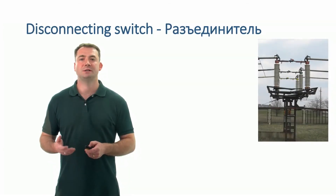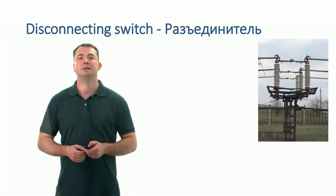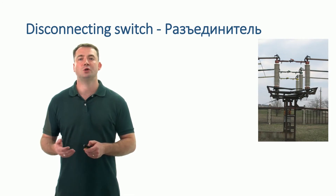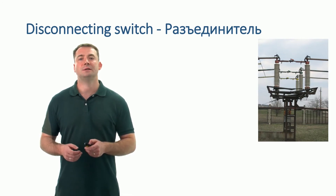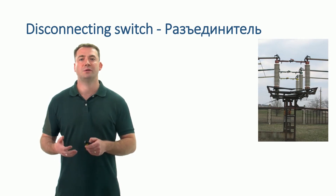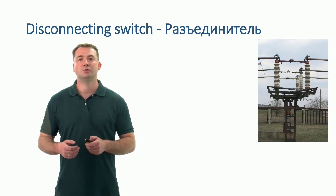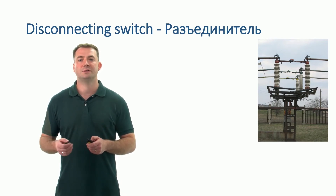Disconnecting Switch. A disconnecting switch, or disconnector, is an electrical switch used in high-voltage circuits to isolate a section with electricity from the section with no electricity. This is used as a full safety method during electrical equipment maintenance or service.